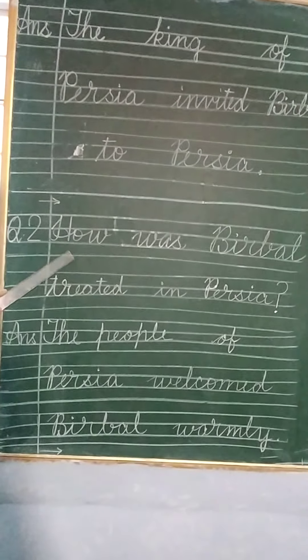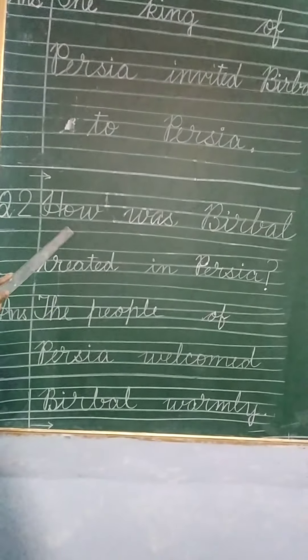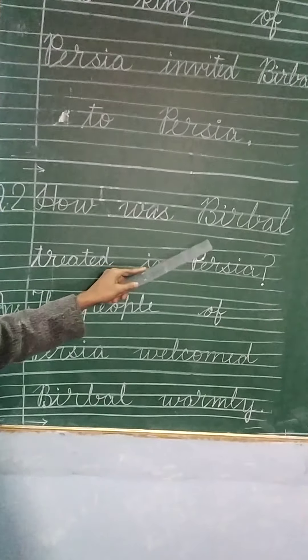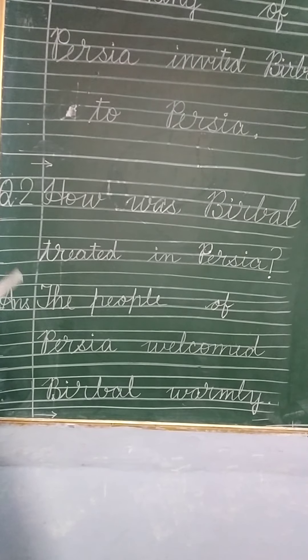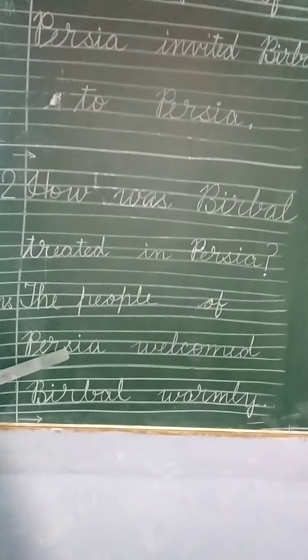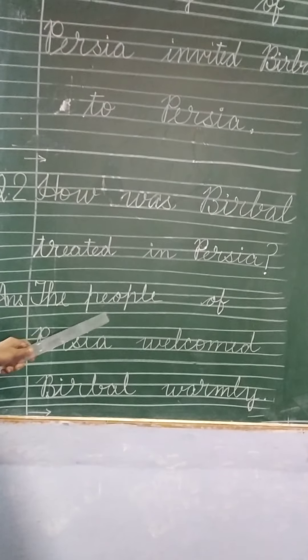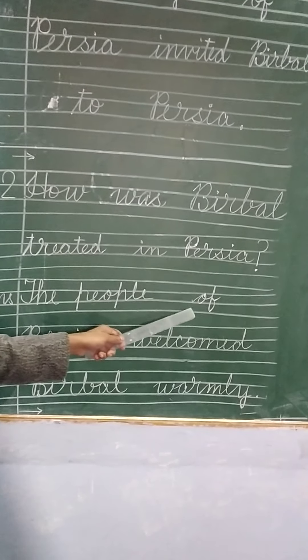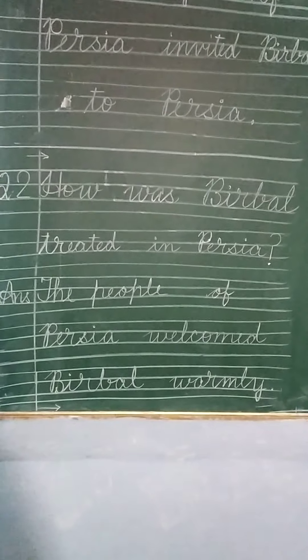Question number 2: How was Birbal treated in Persia? The spelling of treated is T-R-E-A-T-E-D. The answer is: the people of Persia welcomed Birbal warmly. Means Birbal got a very good reception from the people of Persia.